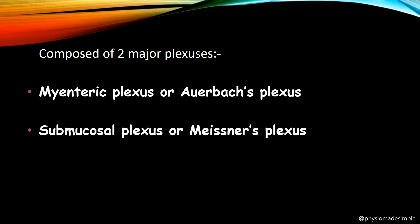The next plexus is the submucosal plexus, which is located in the submucosal layer. The submucosal plexus is also known as Meissner's plexus. Its function is to control gastrointestinal secretions — that is, controlling the production and release of digestive secretions.